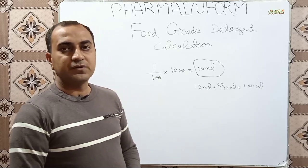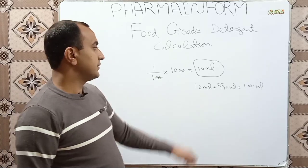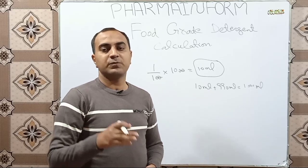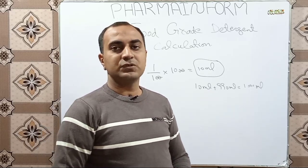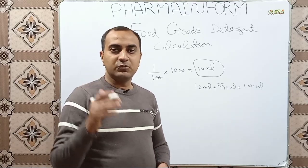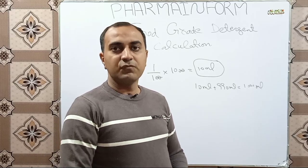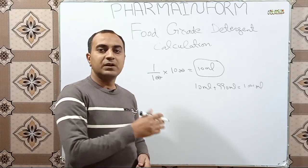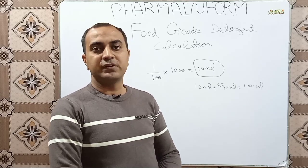In routine practice, we prepare five or ten liter solutions of food grade detergents which are used during the washing of different equipment. So if we want to prepare 10 liters of food grade detergent with one percent concentration, how do we prepare it?